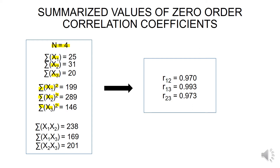The summated values are given for your reference. In the second step, we calculated the product of two variables on an individual item-wise basis: variable 1 and variable 2 in the first case, variable 1 and variable 3 in the second case, and variable 2 and variable 3 in the third case. We then took their summated values, which are given for your reference.